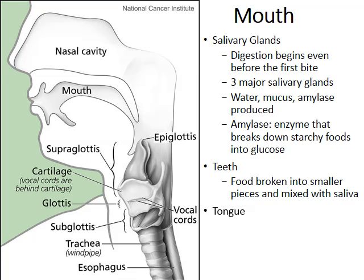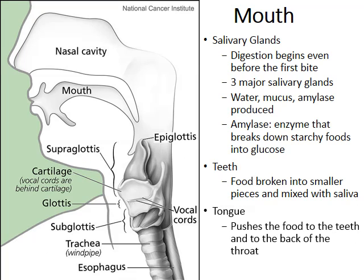Ultimately, your tongue will push the food to your teeth and then to the back of your throat, which is called the pharynx. The ball of food that you've just chewed and your tongue has helped push to the back of the throat is called a bolus.